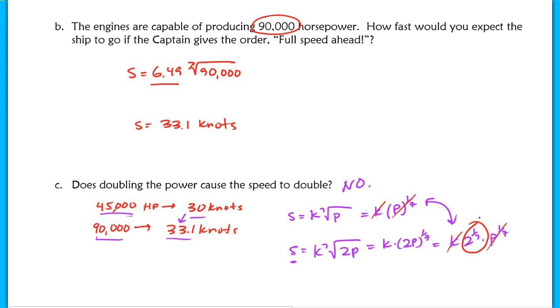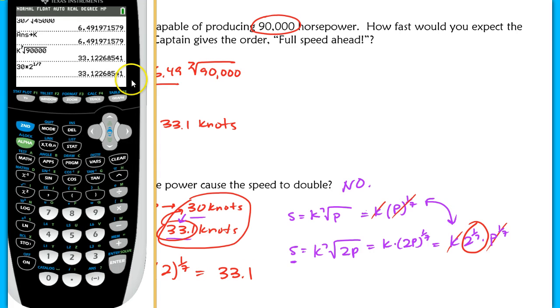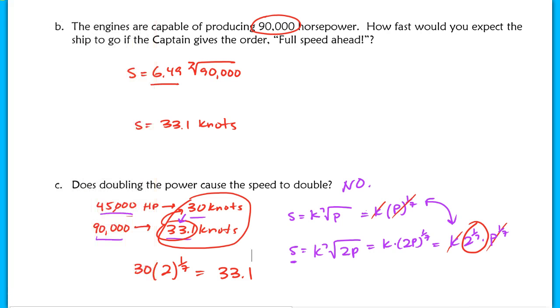If we take a look at these two, k values are the same, so that's not going to count for any difference. The p to the 1/7 is the same, so that won't count for any difference. This is how they differ, a factor of 2 to the 1/7 power. So 33.1 compared to 30 is 2 to the 1/7 power times more than 30. If I took 30 and multiply that by 2 to the 1/7 power, I should end up with 33.1. When you actually test this, I did 30 times 2 to the 1/7 power, I got 33.122, which is the same as when I took the k and the 7th root of 90,000. So doubling the power causes the speed to increase by a factor of 2 to the 1/7 power.